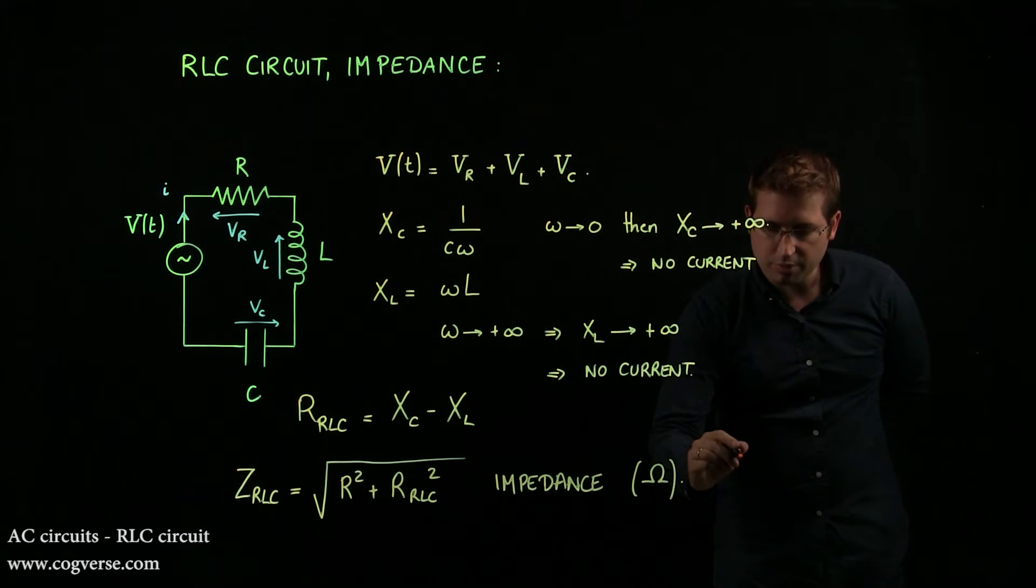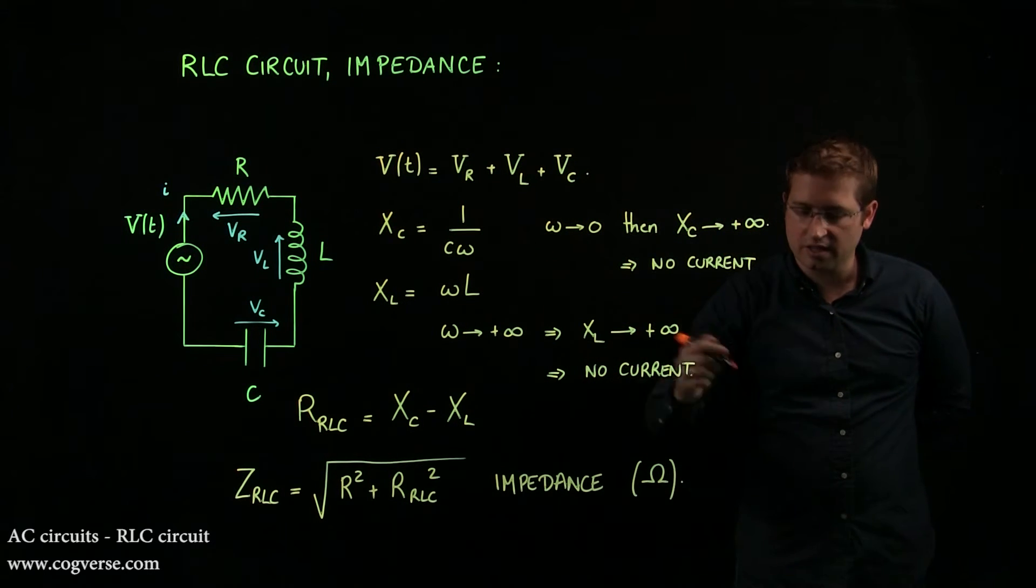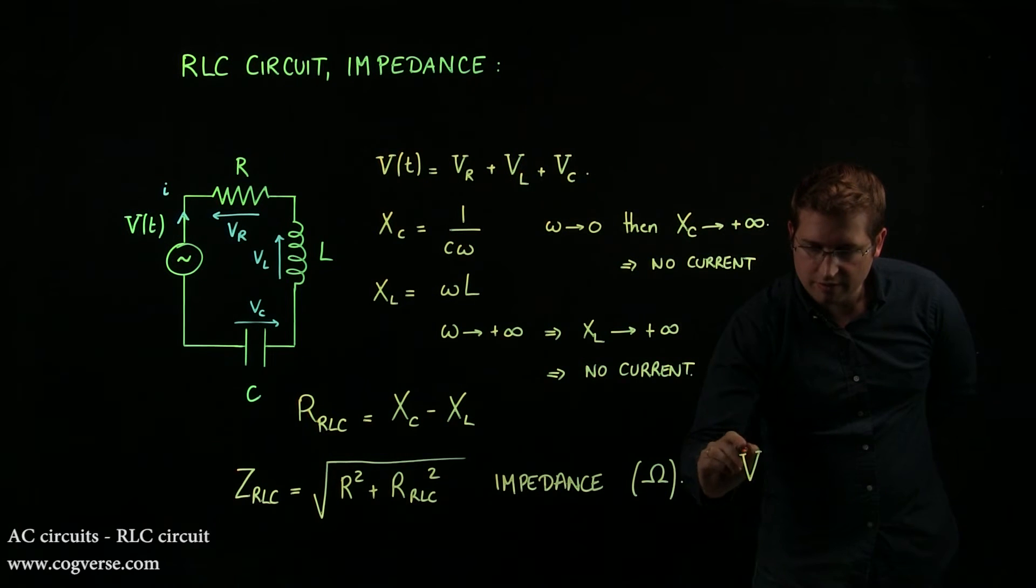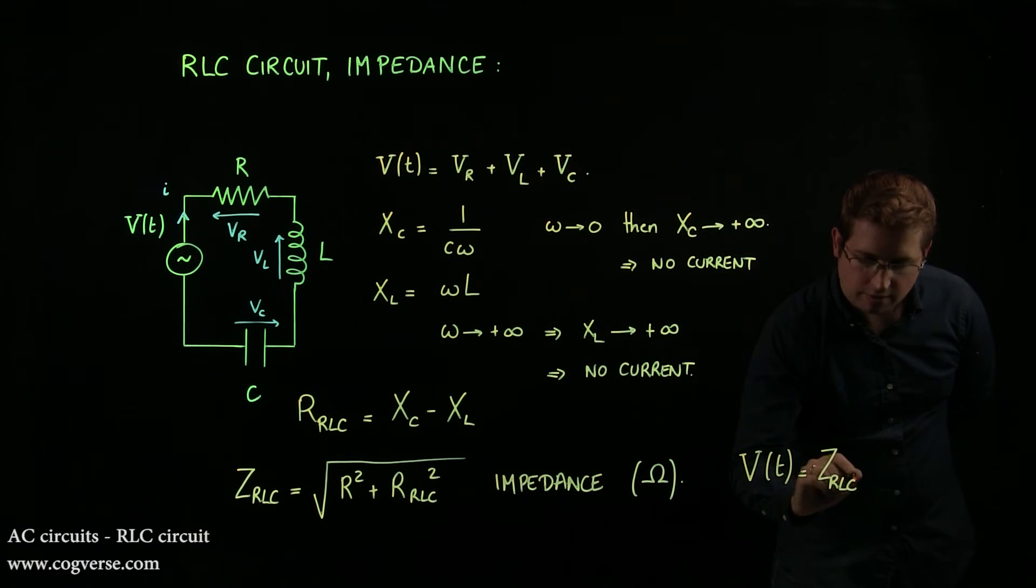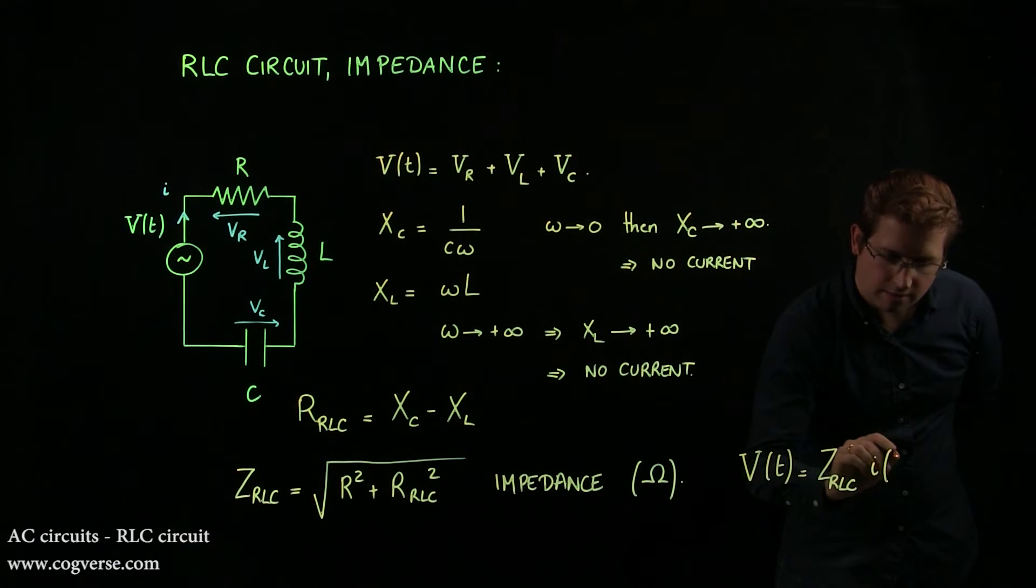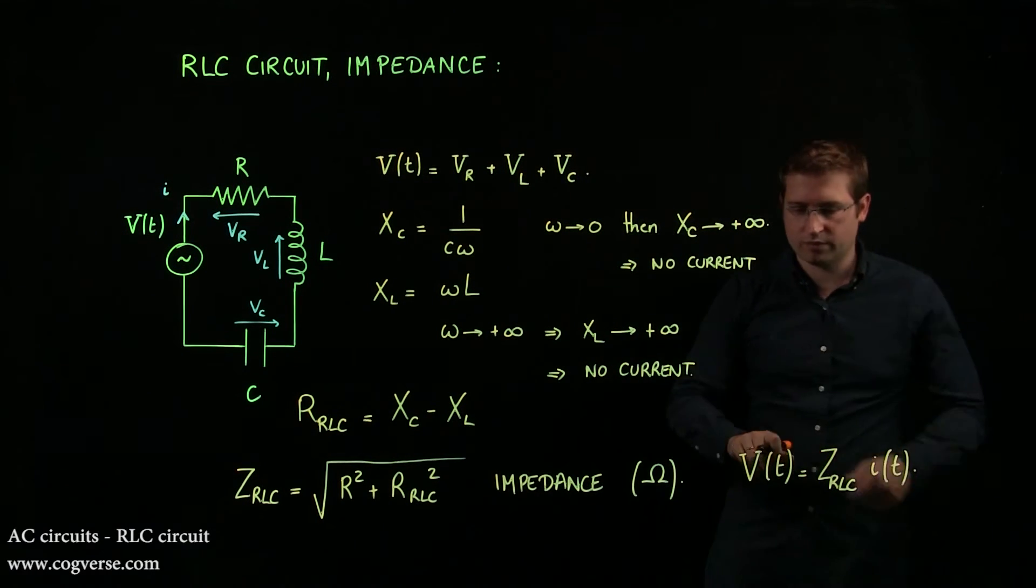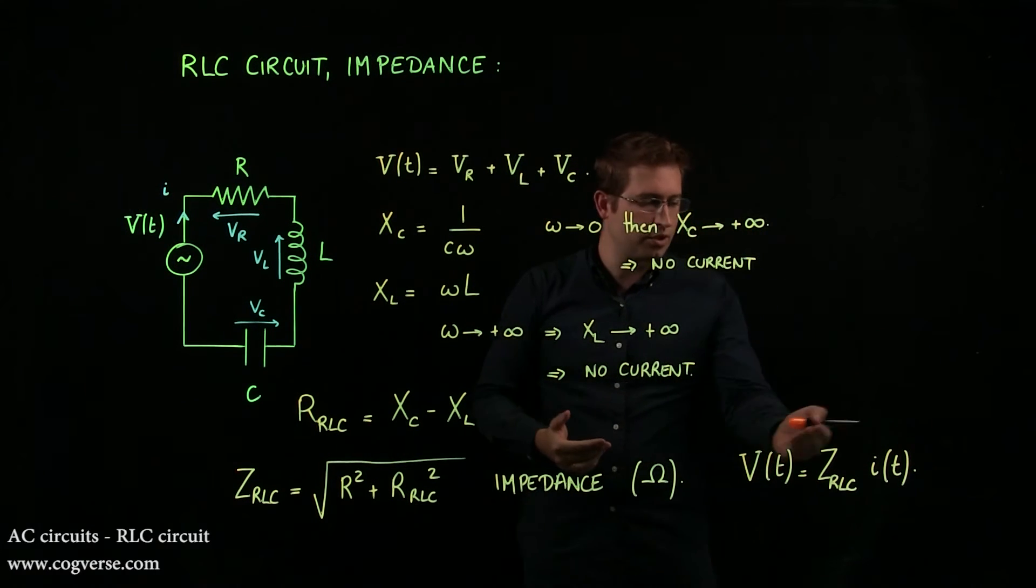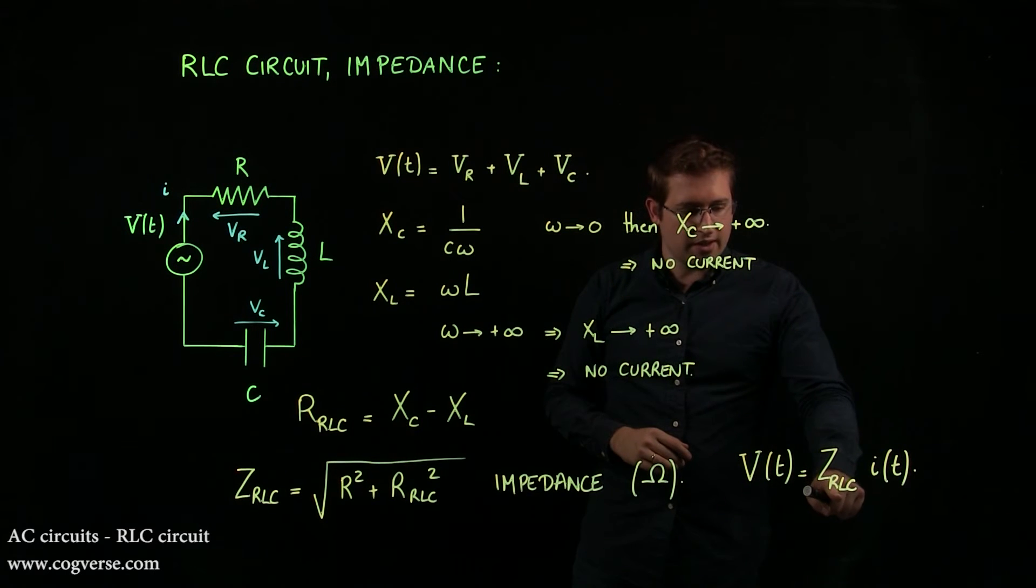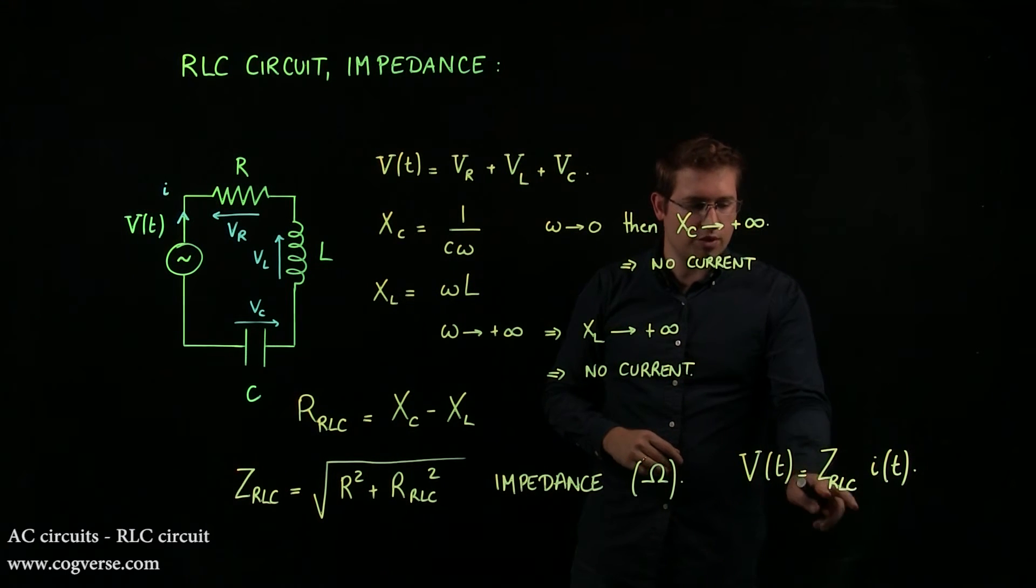And why is that an interesting quantity? Well, that's because the impedance relates V of T to I of T. We can write V of T is equal to ZRLC times I of T.